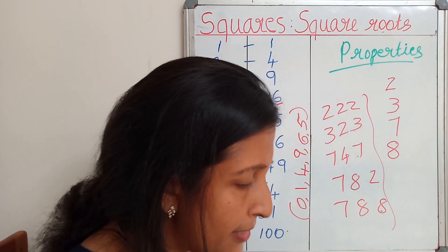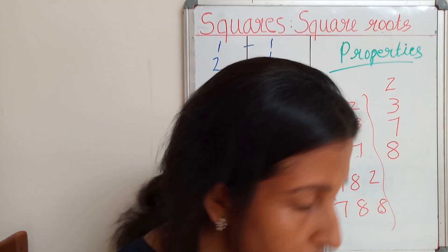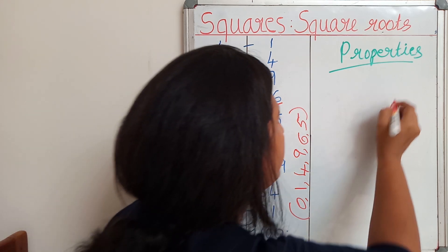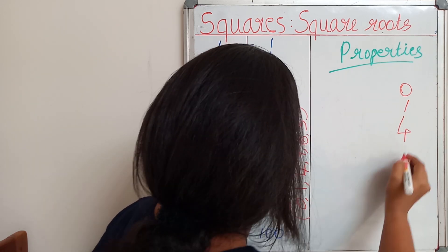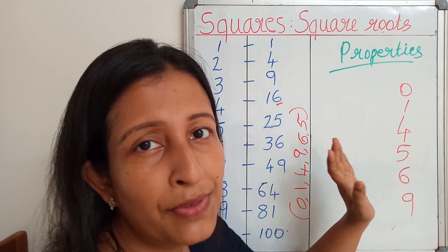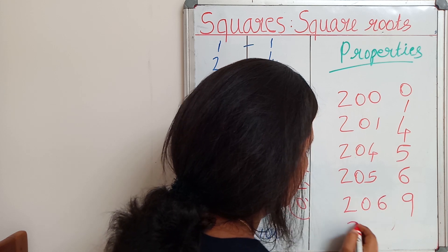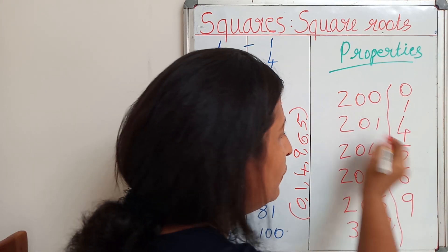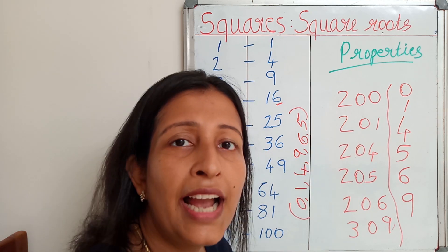And there is another question: write 5 numbers which you cannot decide just by looking at their unit digit. All numbers ending with 0, 1, 4, 5, 6, or 9 — at first sight itself we cannot say whether they are a perfect square or not. Sometimes they may be perfect squares and sometimes they may not.